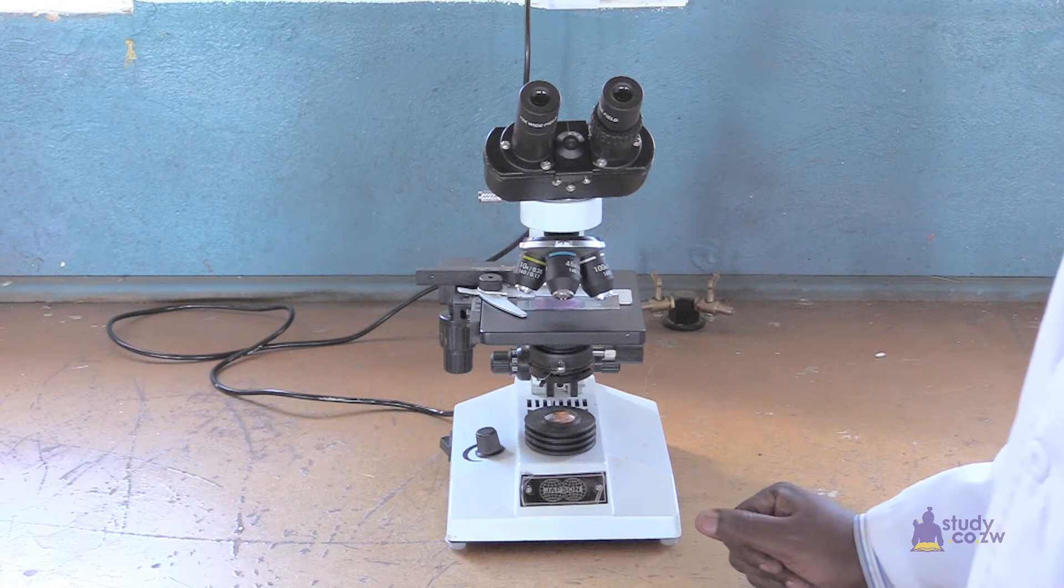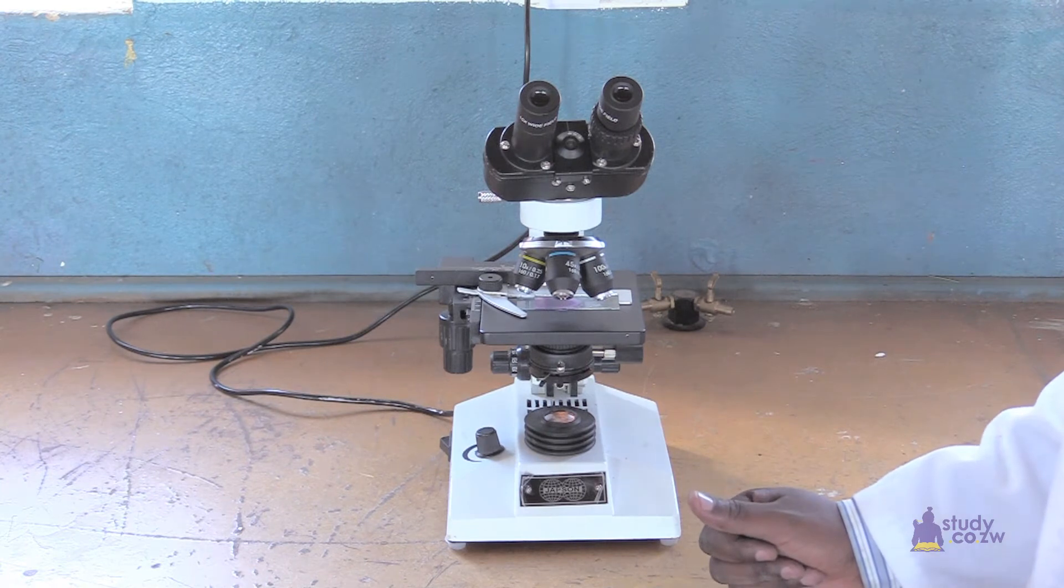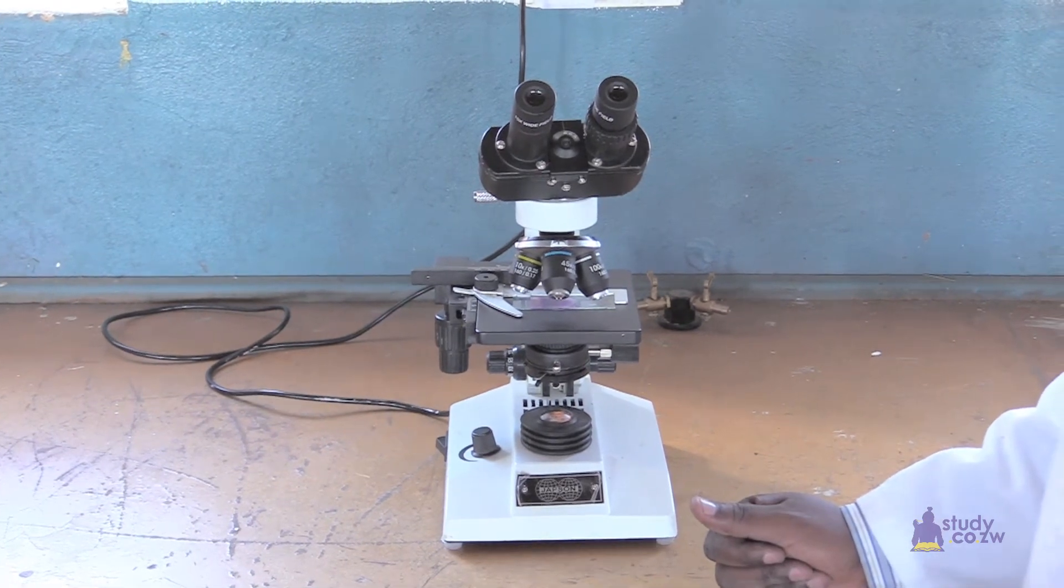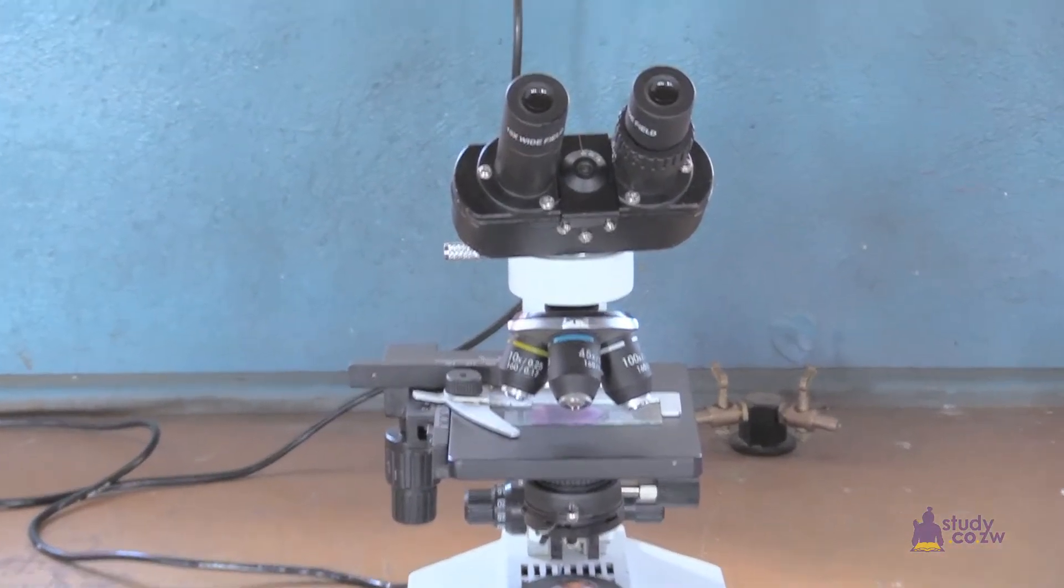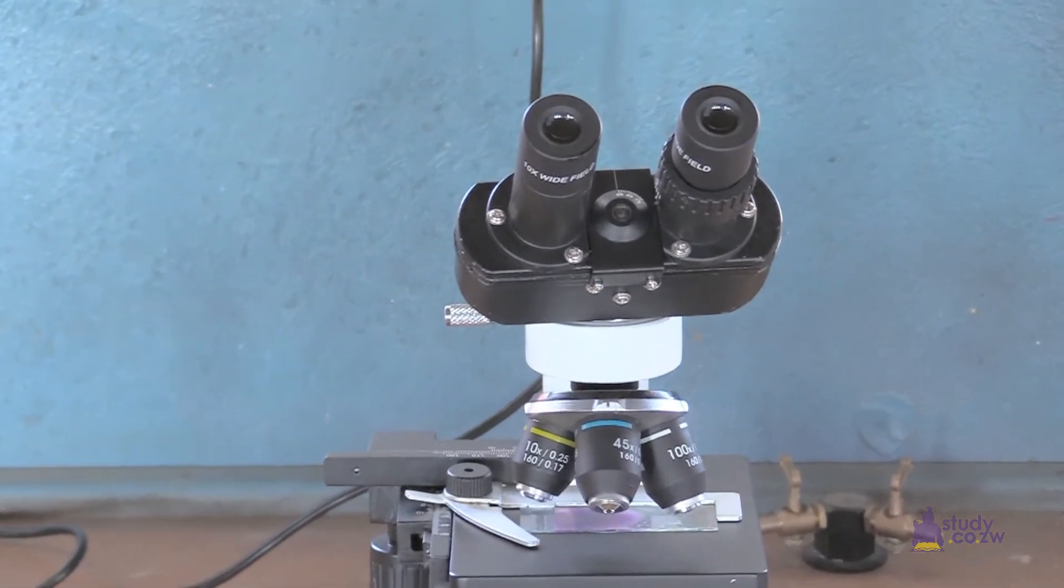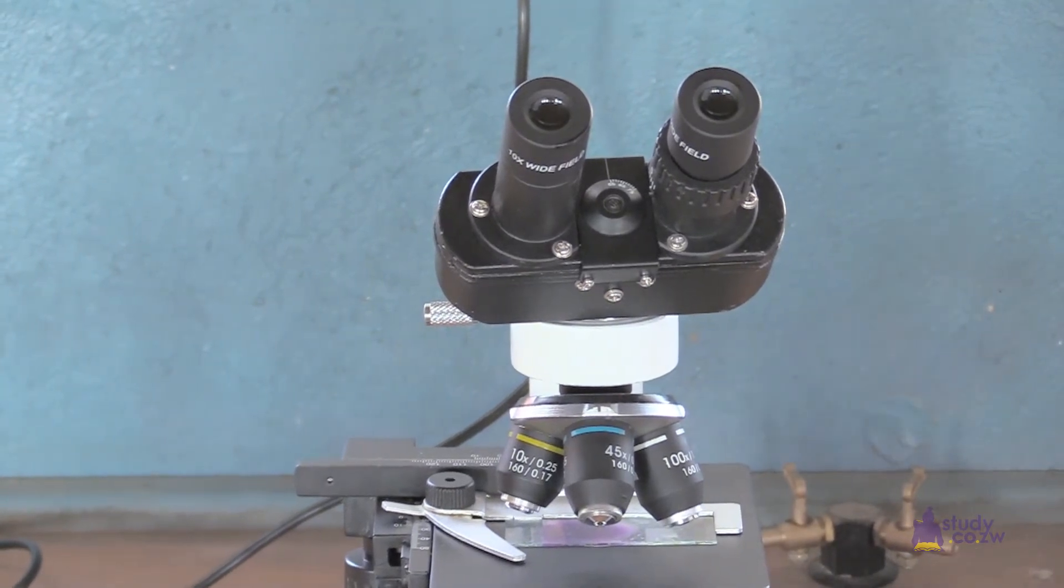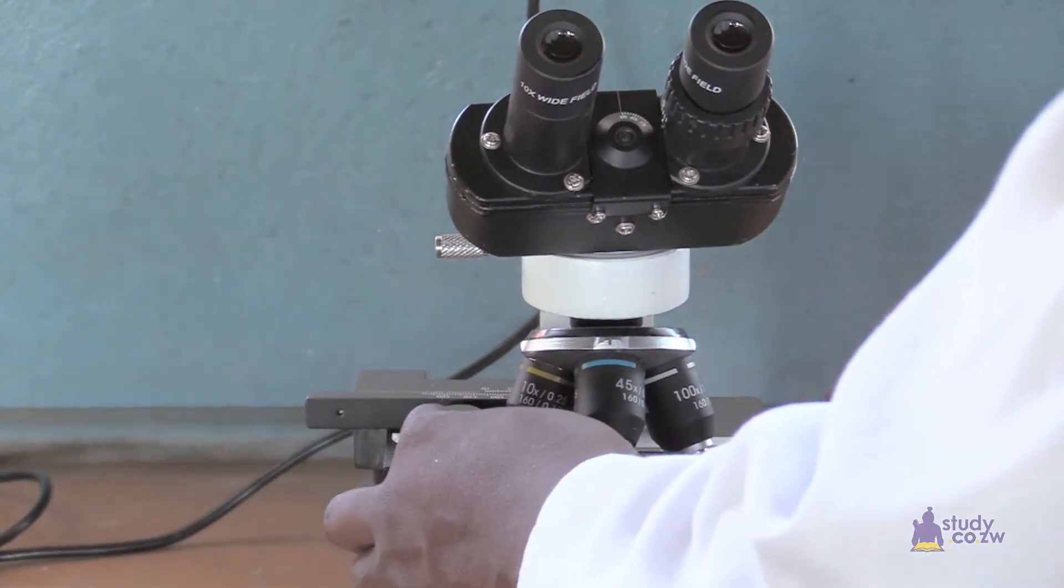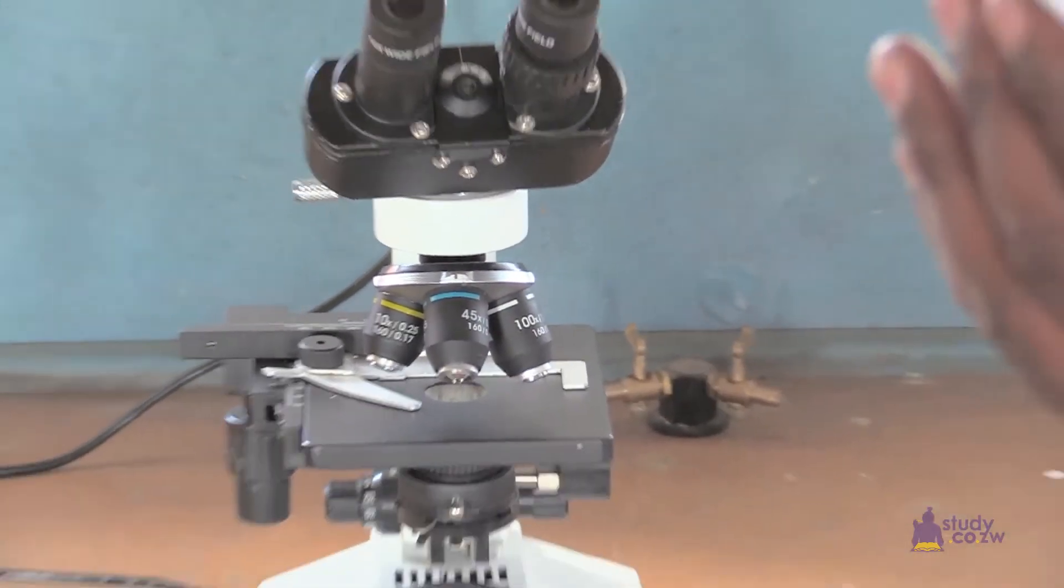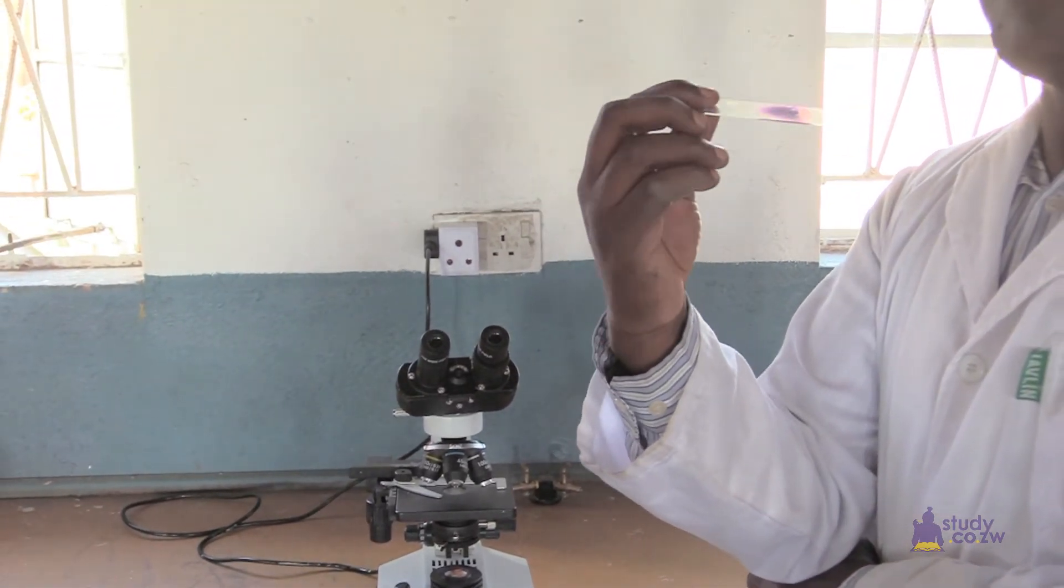This is the microscope. It has the capacity to observe very tiny objects that are not observable by our naked eyes. In terms of magnification, it is better than the bio viewer. So in a microscope, we must have prepared slides. This is a slide again of a plant cell prepared in this lab.